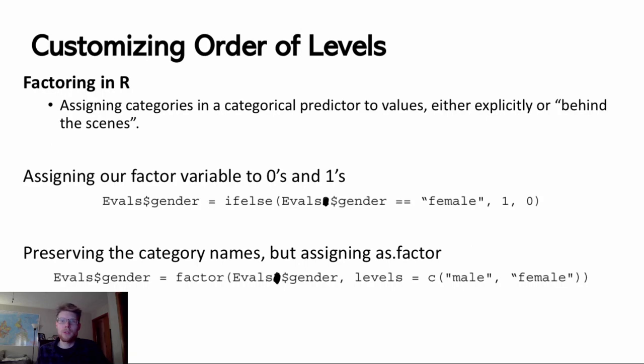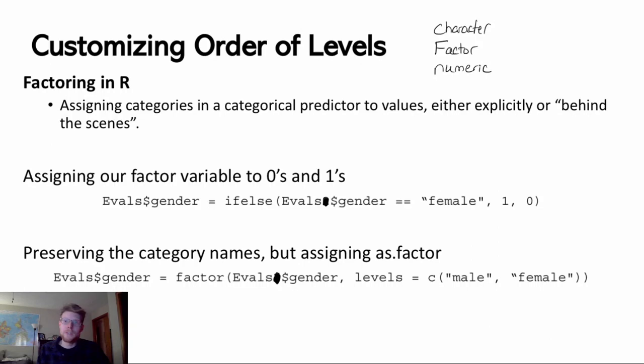R stores variables differently under different structures. One common type for storing a variable is as a factor. Some other common types would be character as well as numeric. Depending on how we're going to be using a variable, either in plotting or in creating a model, we might want to pay attention to the structure of our variable when we're using it.